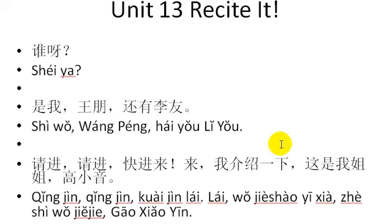Turn to pages 122 and 123 in your book so you can take notes. So in this dialogue, someone knocks on the door, and Gao Xiaoyin says, 'Who is it?' The Chinese express that by saying 谁呀?